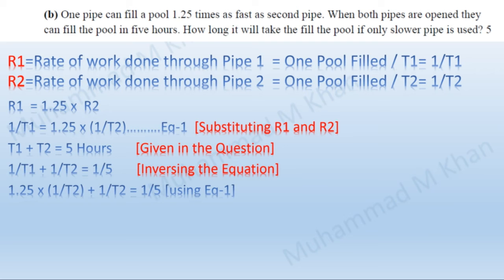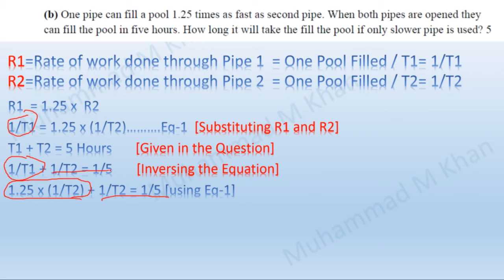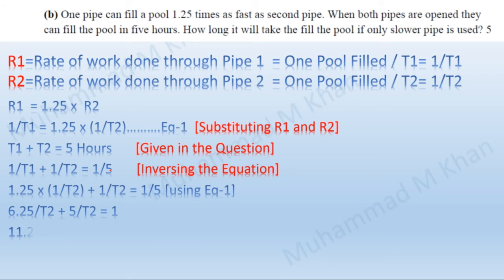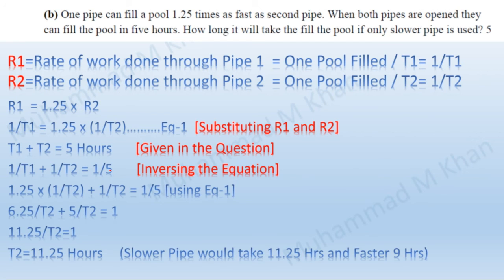Substituting the value of t1 using the first equation: 1/t1 = 1.25 × (1/t2), so replacing 1/t1 in the combined equation gives us 1.25/t2 + 1/t2 = 1/5. The rest of the equation is reproduced as it was before, allowing us to solve for t2.